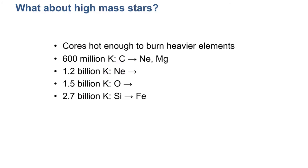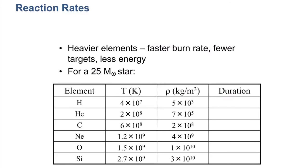The temperatures keep going up — 600 million to 1.2 billion to 2.7 billion Kelvin by the time you're burning silicon into iron. The other thing that happens is you get less and less energy out. It's kind of like squeezing an orange — you get most of the juice out the first time you squeeze it. Turning hydrogen into helium gives you the most energy. Turning helium into carbon, you get much less. Every time you take another squeeze, you get less and less juice. There's less and less available energy in burning those heavier elements, and so those phases of a star's life last shorter and shorter times.